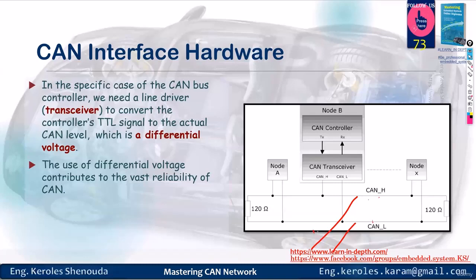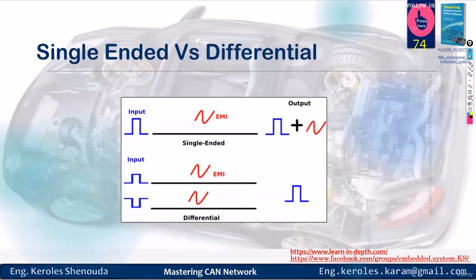The CAN High and CAN Low are considered differential voltage. This means the transceiver reads the difference between them and converts it to logic 1 or 0, which are either recessive or dominant, and outputs them to the TX and RX.